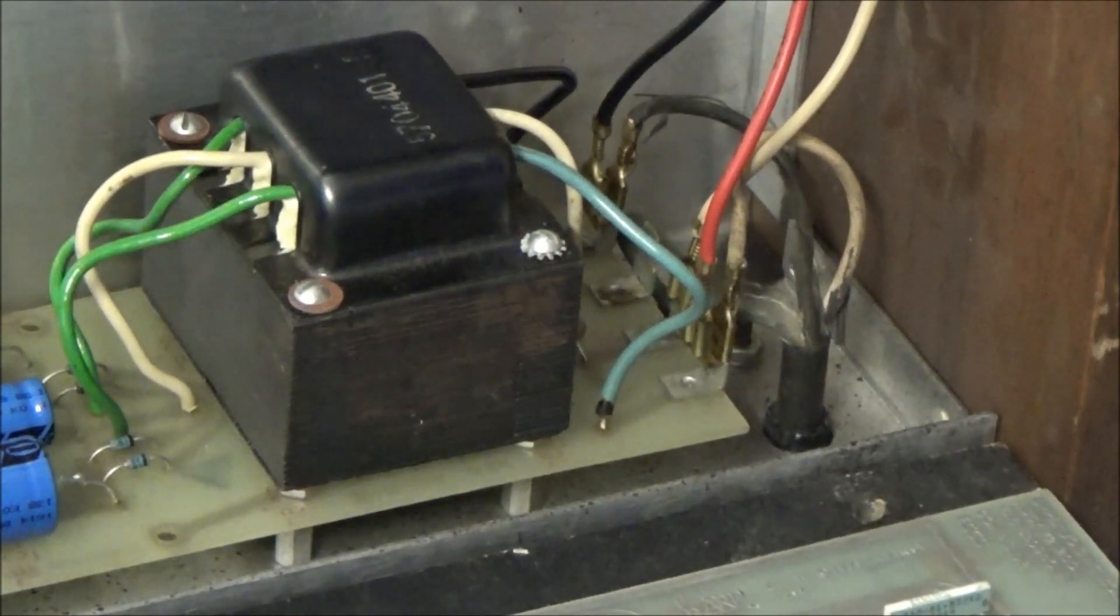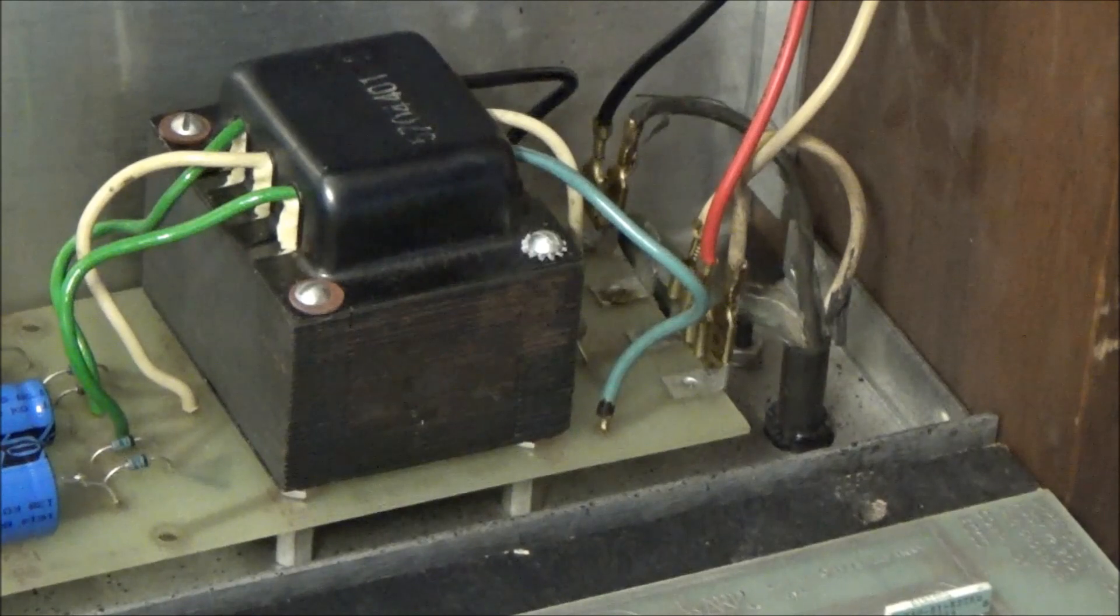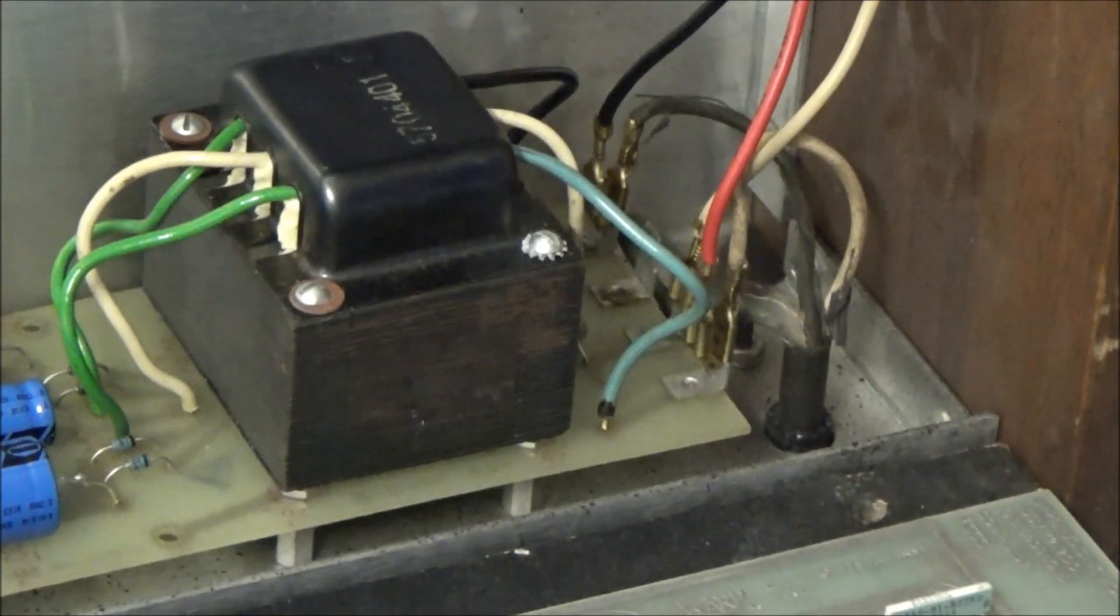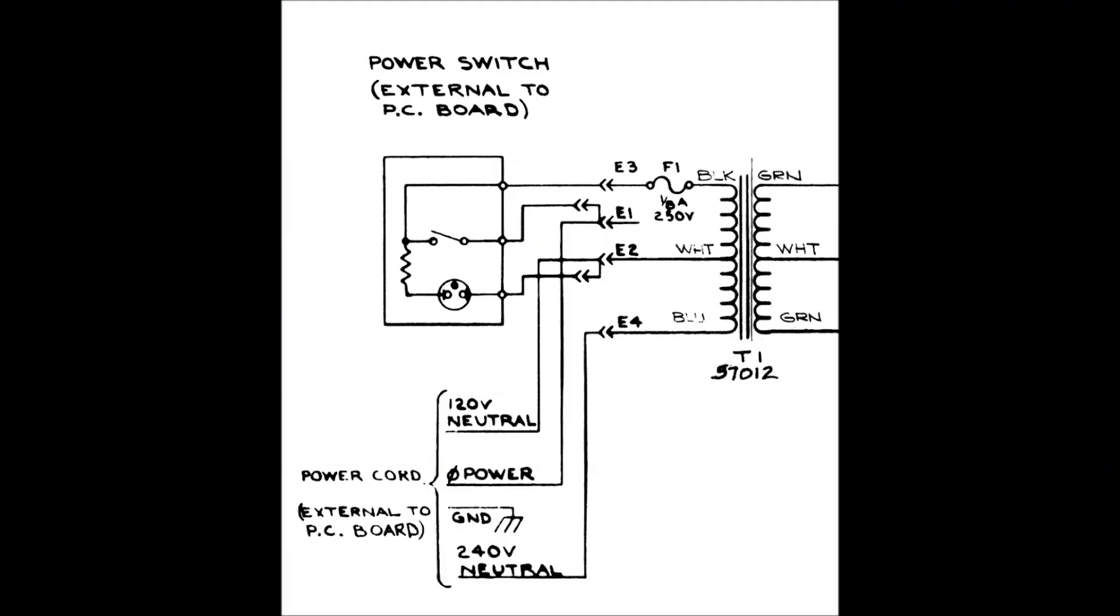Conversely, if you pick up an ARP that's configured for 240 volts, you now know what to do to convert it back to 120 volts. Later ARPs were designed to be easier to open than this one, so switching back and forth between voltages would have been less of a chore than on this Omni-1. I'll flash the schematic for the power wiring really quickly. This is found in all the ARP service manuals, which are easy to find on the web.